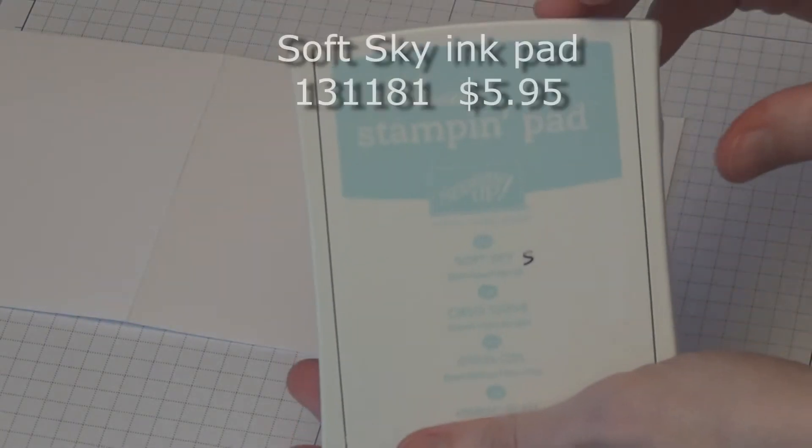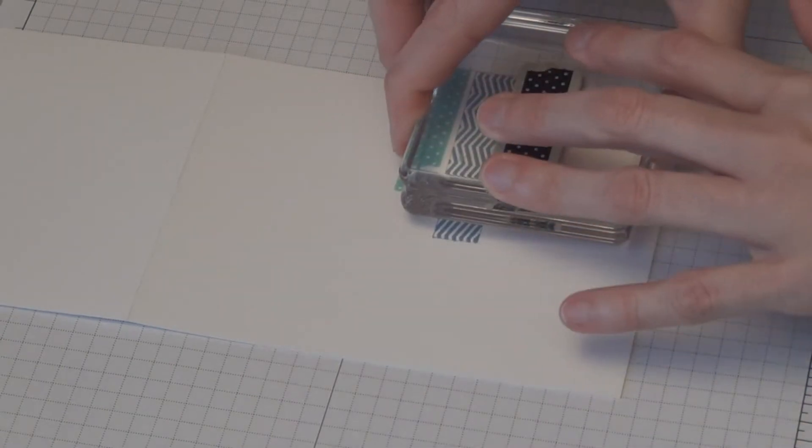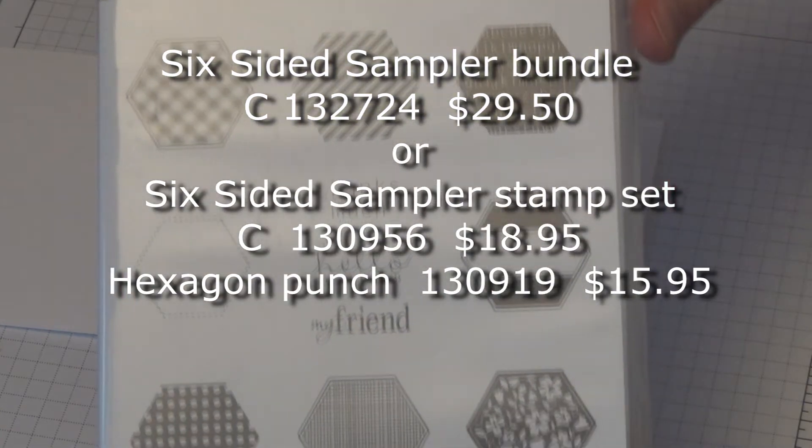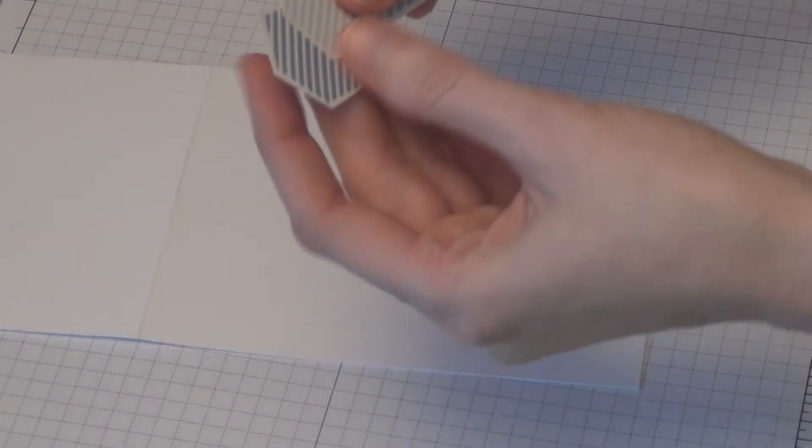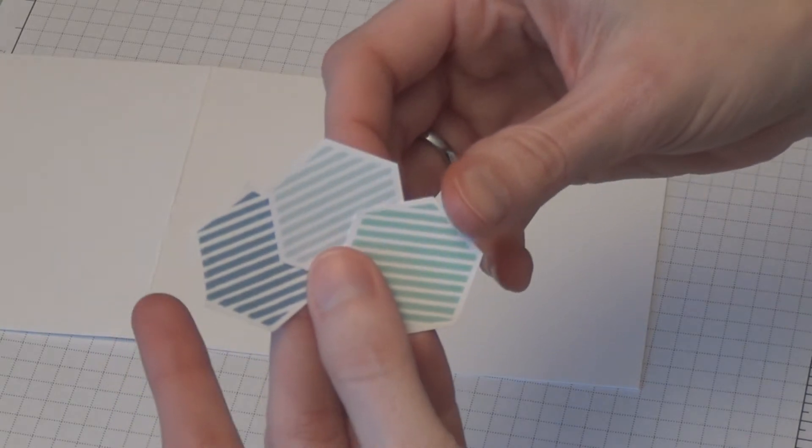And now I am going to use Soft Sky. I have now used the six sided sampler set. I stamped one in each of the three colors that I used.